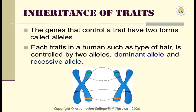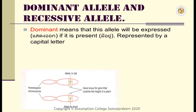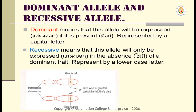Let's take a look at the inheritance of traits. The genes that control a trait have two forms called alleles. Each trait in a human, such as type of hair, is controlled by two alleles — called a dominant allele and a recessive allele. Dominant means that this allele will be expressed if it is present, and it is always represented by a capital letter. Recessive allele means that this allele will only be expressed in the absence of a dominant trait, and is represented by a lowercase letter.